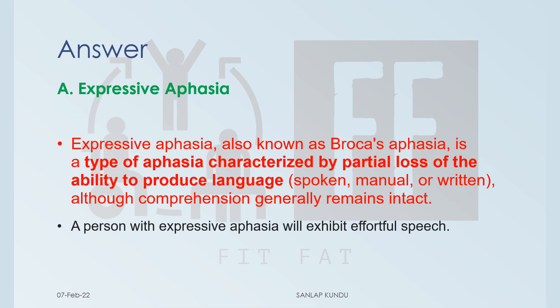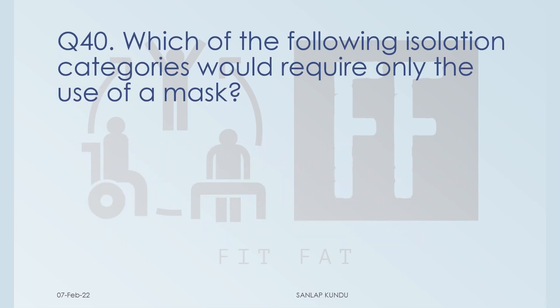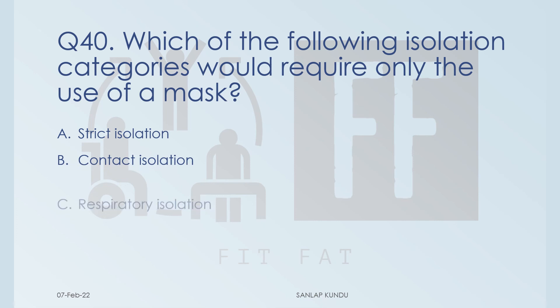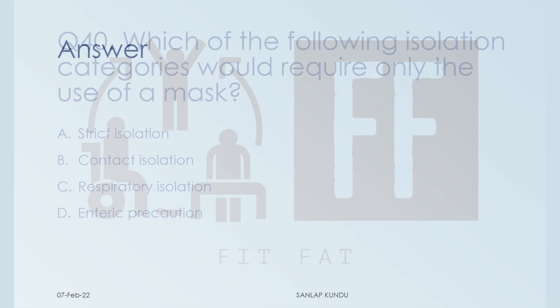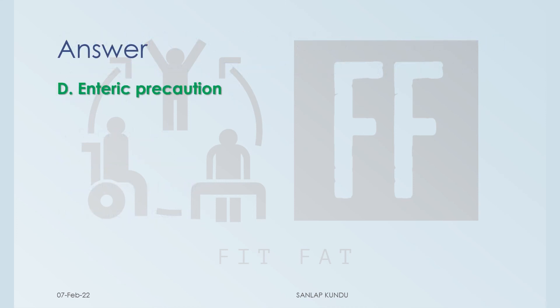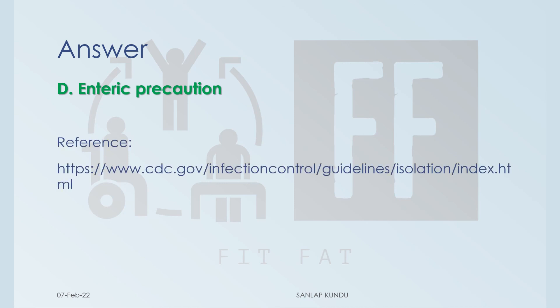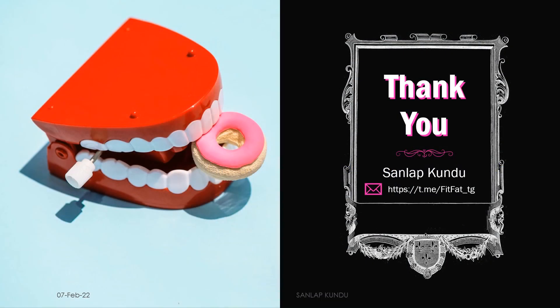Question number 40: which isolation category would require only the use of a mask? Options: A) strict isolation, B) contact isolation, C) respiratory isolation, D) enteric precaution. The answer is option D, enteric precaution. For more on this, check the reference in the description box. Thank you for watching — please like, share, and subscribe, press the bell icon, and join my Telegram channel to get notes and book PDFs.